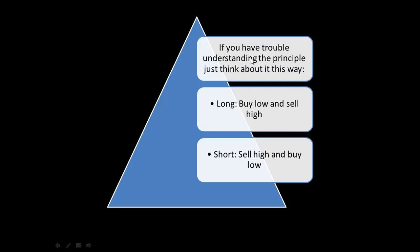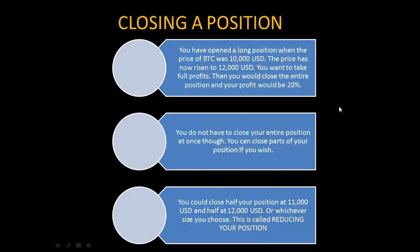To summarize: long means to buy low and sell high; short means to sell high and buy low. Closing a position: if you opened a long position when BTC was at ten thousand dollars and the price has risen to twelve thousand dollars, you close the entire position and your profit would be twenty percent. You do not have to close your entire position at once — you could close half at eleven thousand dollars and half at twelve thousand dollars. This is called reducing your position.